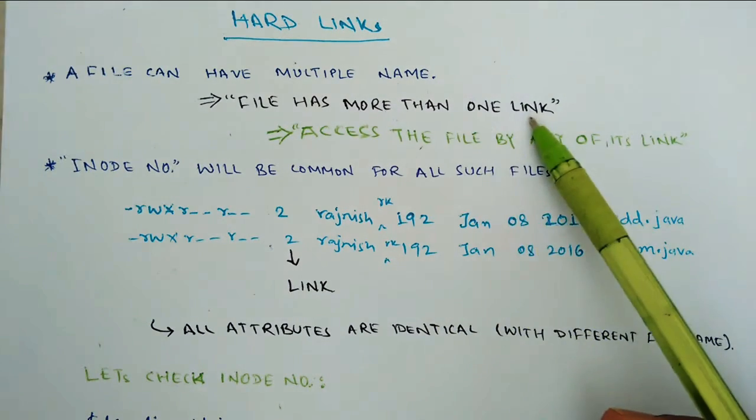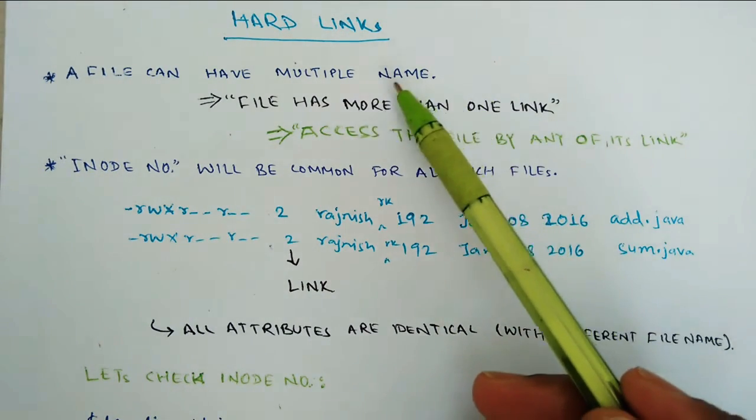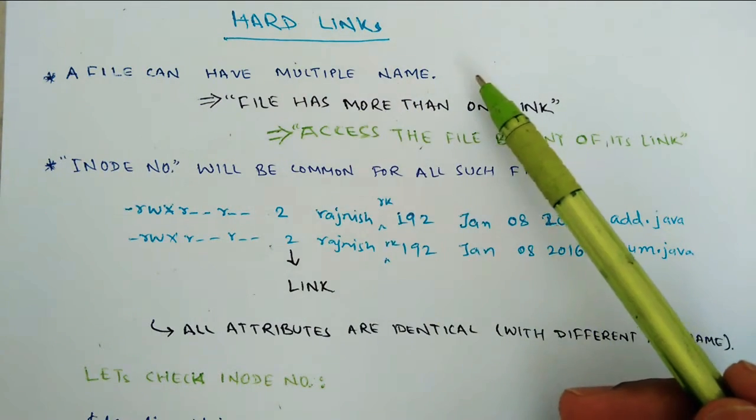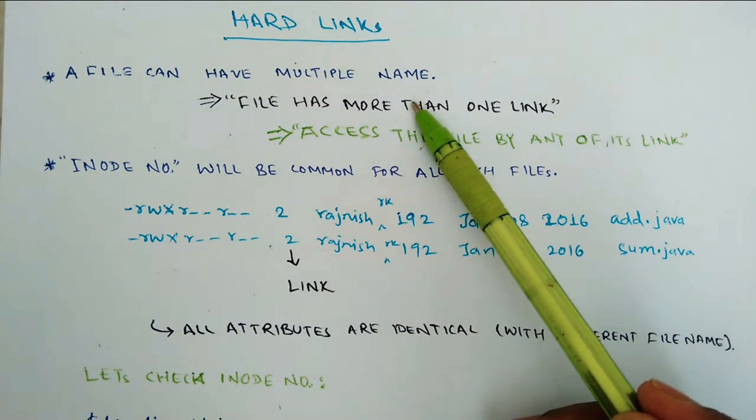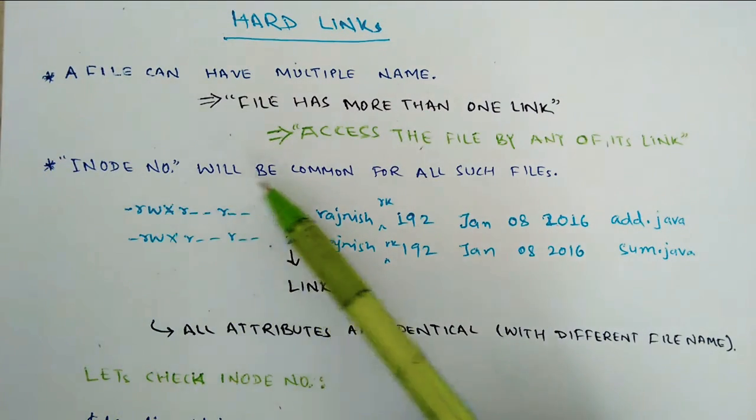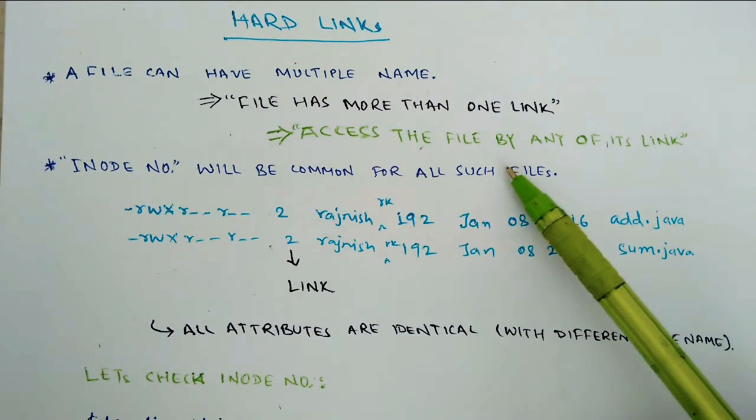A file has more than one link. If there are multiple names, if we made many copies, it means the number of links is going to increase. And we can access the content from any file name. We can access any link.